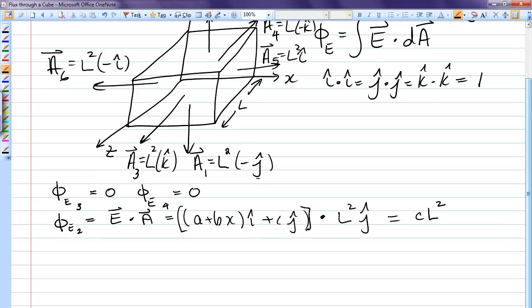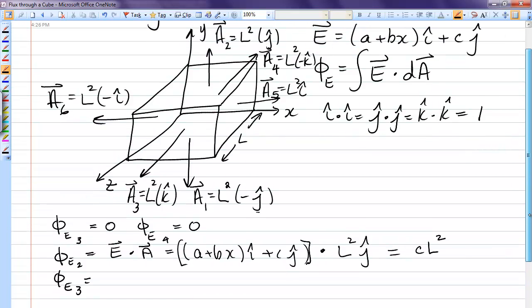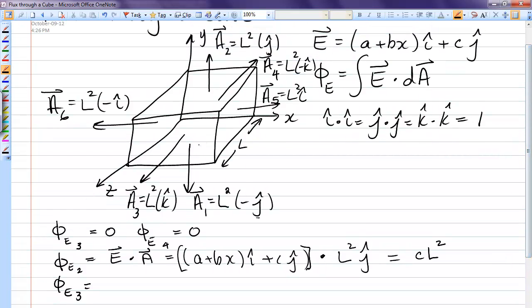Okay. We're going to do one, which points down. So phi e1 is E dot A again. And once again, we're just going to pick up the j hat, but notice now it's going to be a negative j hat. So this is going to be, we'll have the c j hat from the electric field, and we'll dot that with L squared negative j hat. And so this gives us negative c L squared.